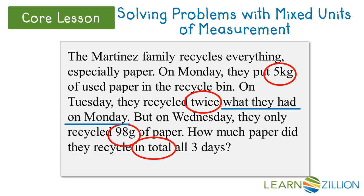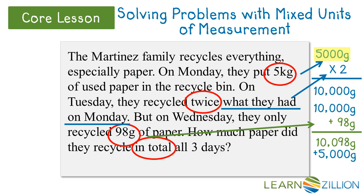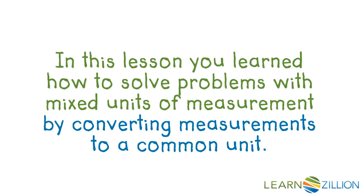Now we go back to our problem, and we can see that 5 kilograms is the same as 5,000 grams. Then on Tuesday, they recycled twice that much, so 5,000 times 2 is 10,000 grams. Now if I take that 10,000 grams and add the 98 grams they recycled on Wednesday, I have a total of 10,098 grams. And then finally, I need to add the 5,000 grams they recycled on Monday for a total of 15,098 grams. In this lesson, you learned how to solve problems with mixed units of measurement by converting measurements to a common unit.